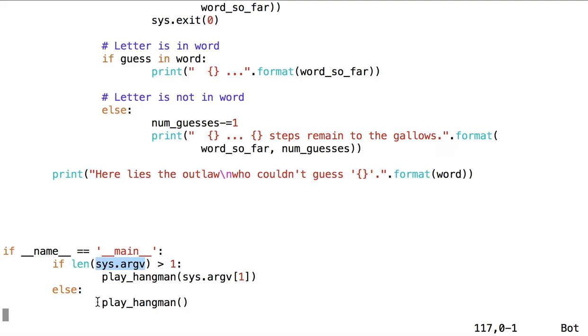Sys is a module that we imported at the top that contains various useful methods and values that are related to the operating system. argv is the argument vector, so everything that is passed in as a positional parameter to the script is stored in the argument vector. So it's a list of arguments. So what we're asking here is, is the length of the argument vector greater than one? In other words, is there more than one value stored in this list called argv?